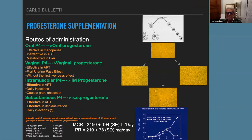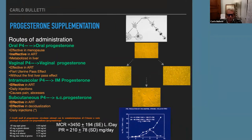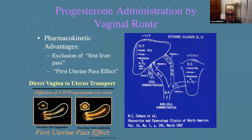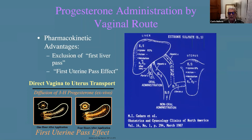Even if the levels seem quite low, we have to think about the pharmacokinetics of vaginal administration. Here you can see in the left side the diffusion of radioactive progesterone in an extracorporeally perfused uterus. We can see that there is a first pass to the uterine tissue and then it goes into circulation. So we have high concentration in the tissue and low concentration in the blood. But we don't care about the blood concentration — we care about the concentration inside the uterine tissue.